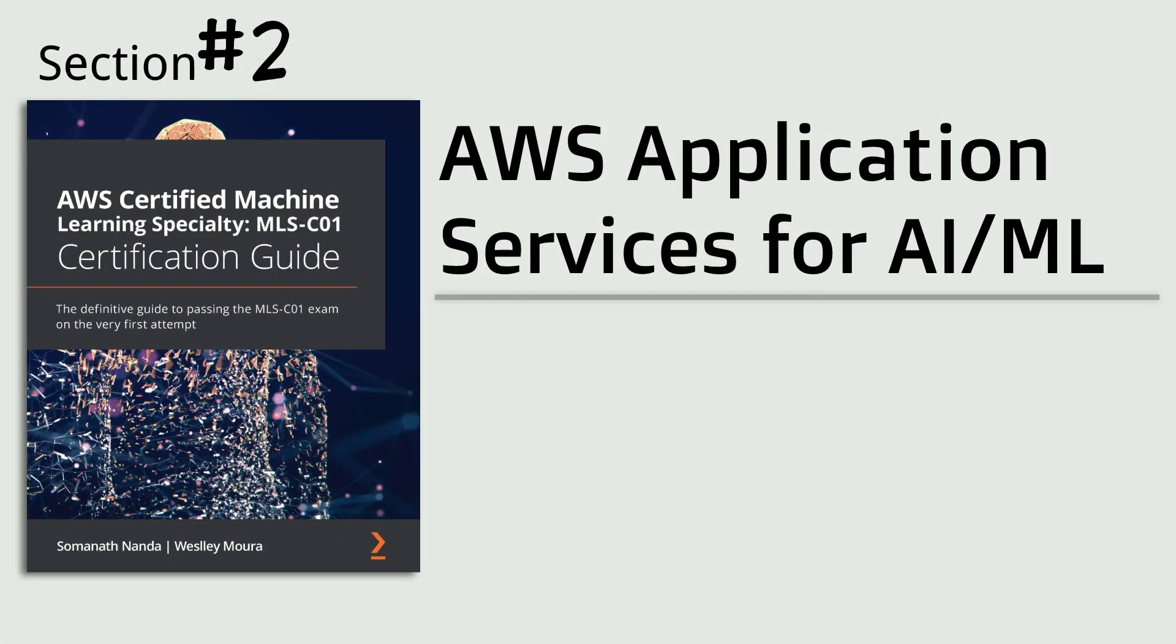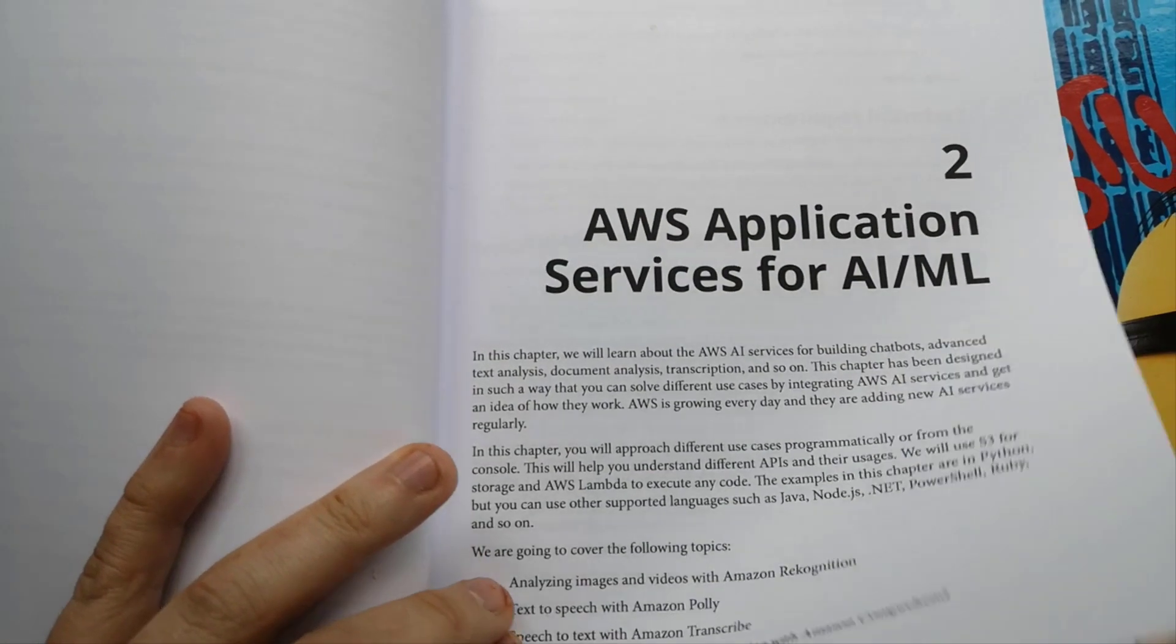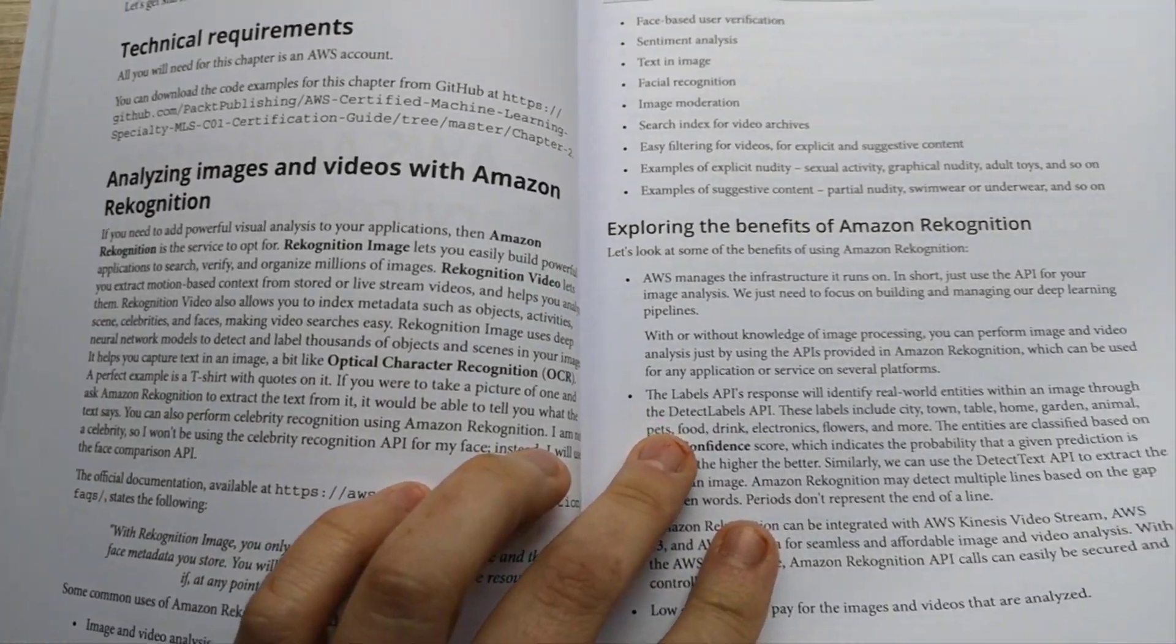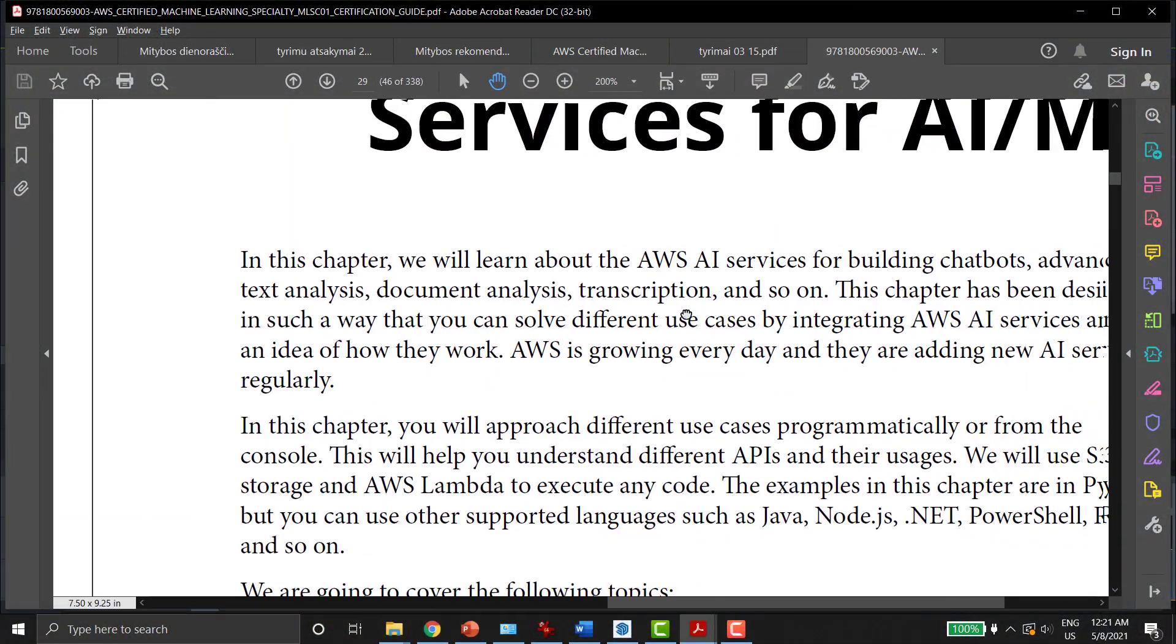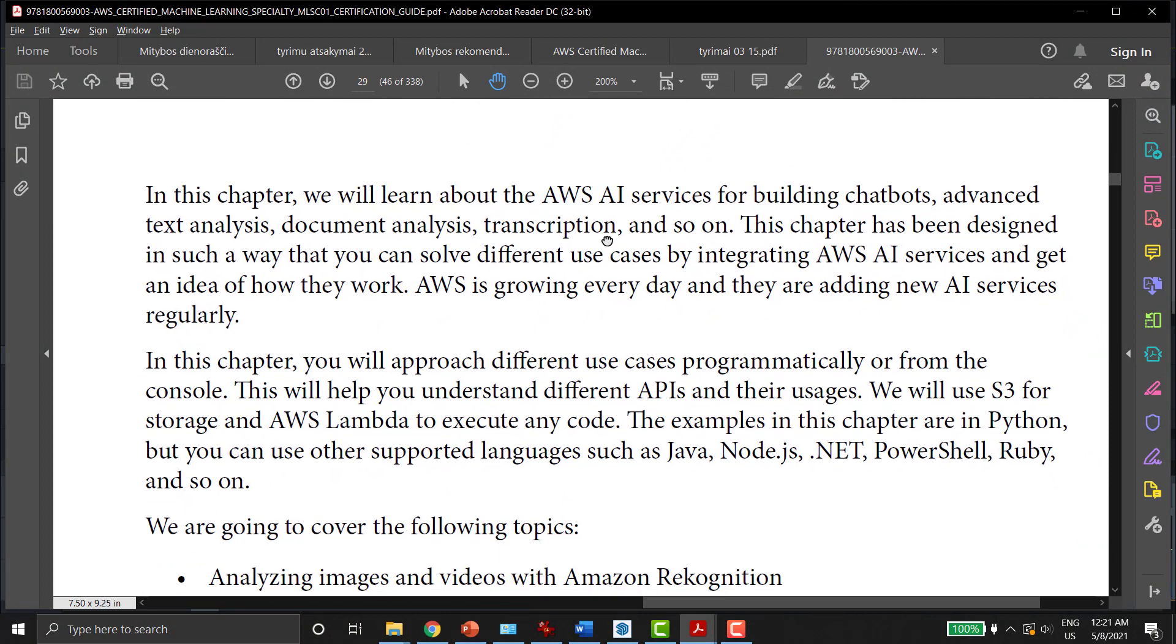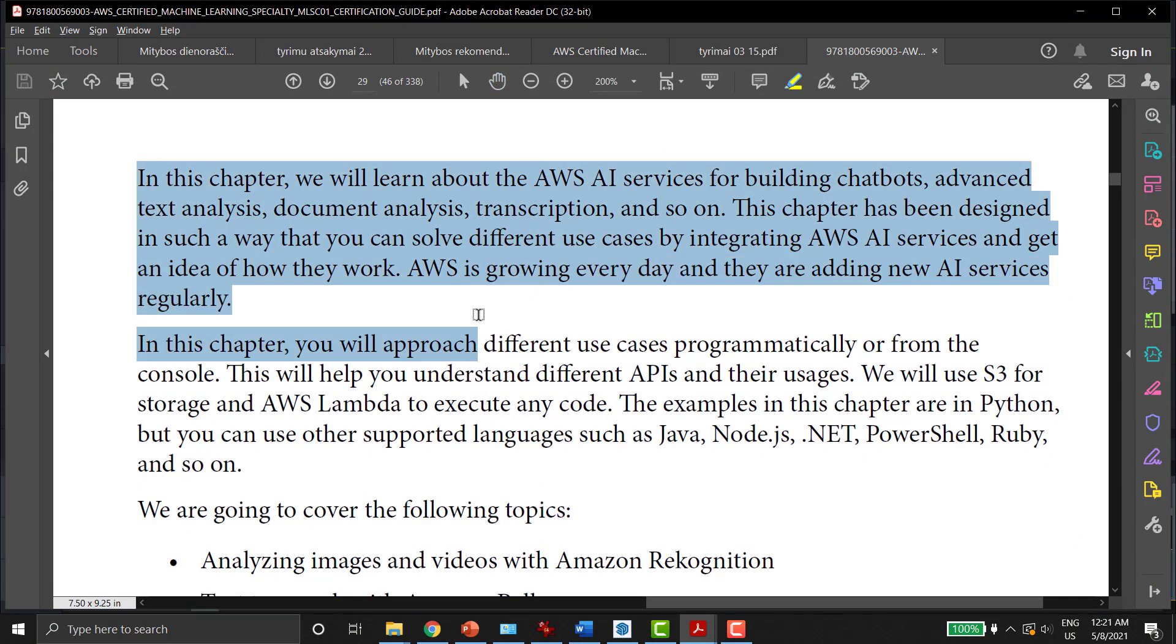The second section explains about AWS application services for artificial intelligence and machine learning. Let's take a look at the first page in this chapter and read. In this chapter, we will learn about the AWS artificial intelligence services for building chatbots, advanced text analysis, document analysis, transcription and so on.